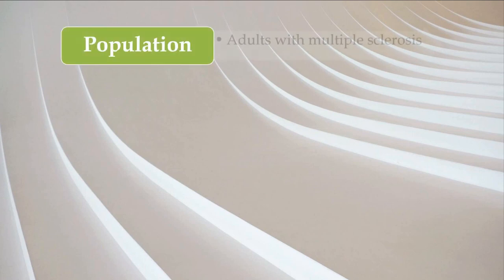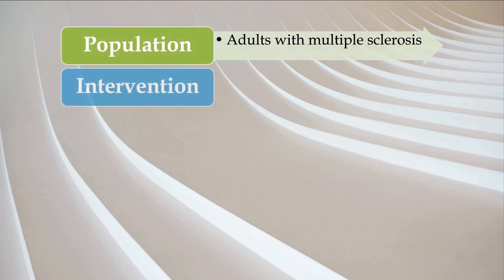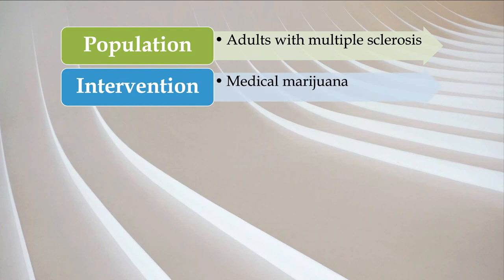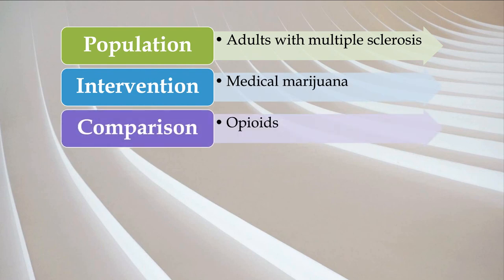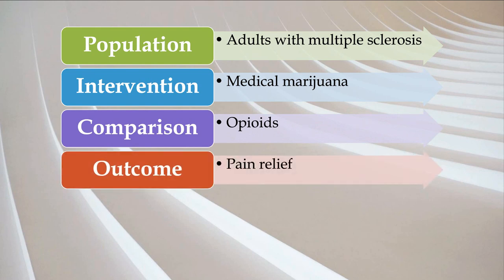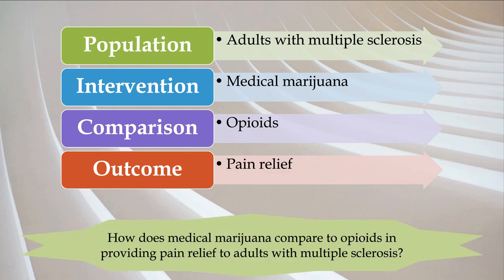Our population is adults with multiple sclerosis. The intervention is medical marijuana. The comparison would be opioids. And the outcome would be providing pain relief. We can then rearrange the PICO elements to create a research question: How does medical marijuana compare to opioids in providing pain relief to adults with multiple sclerosis?